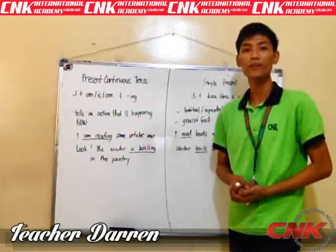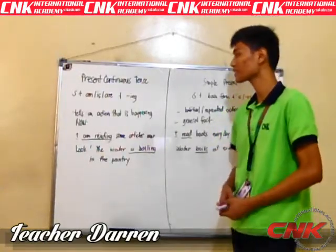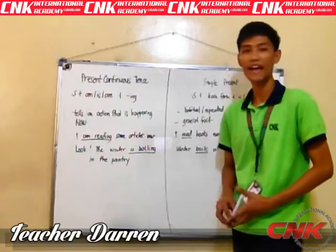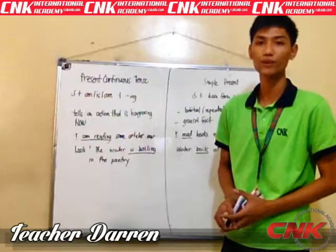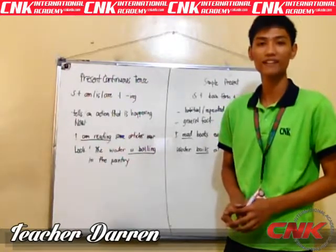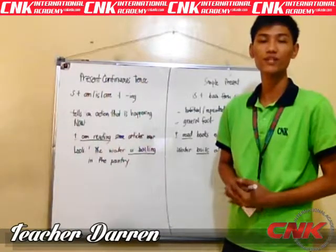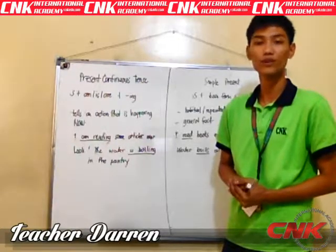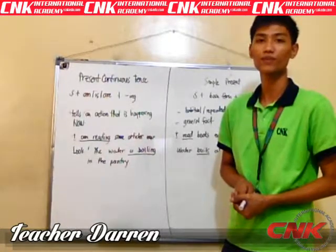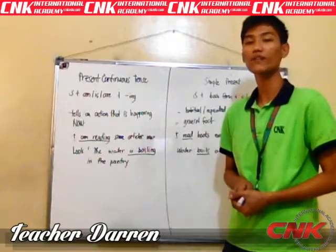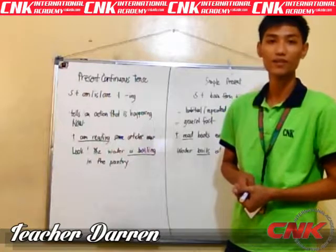Let's start with present continuous tense. Our pattern will be: subject plus the be verbs — am, is, are — plus verb in -ing form. If your subject is I, use am plus verb in -ing. If your subject is a singular pronoun or noun, use is plus verb in -ing form. On the other hand, if your subject is in plural form or uses plural pronouns, use are plus verb in -ing.